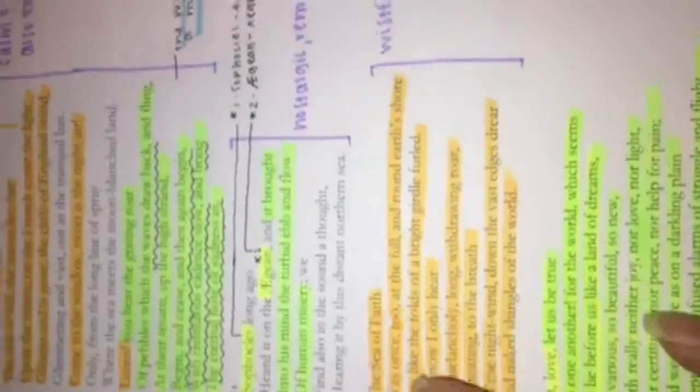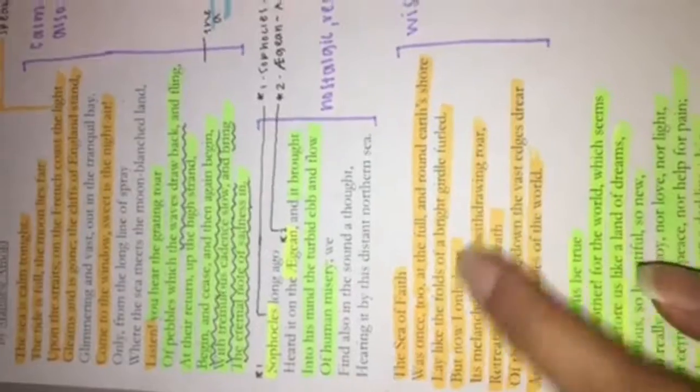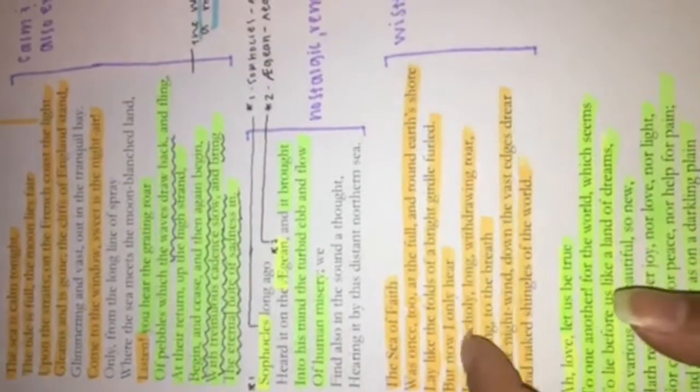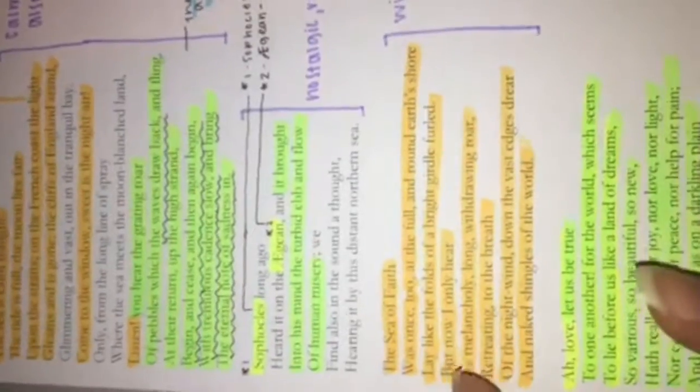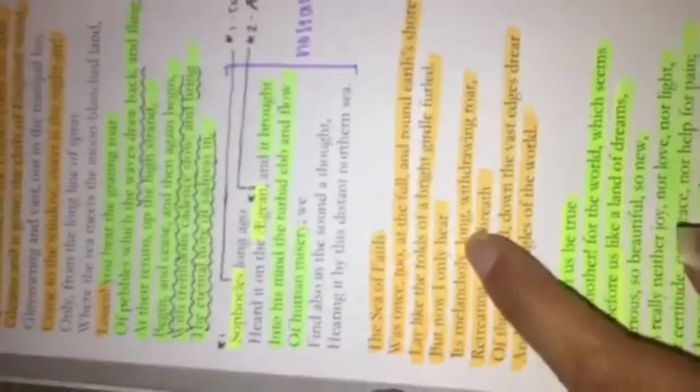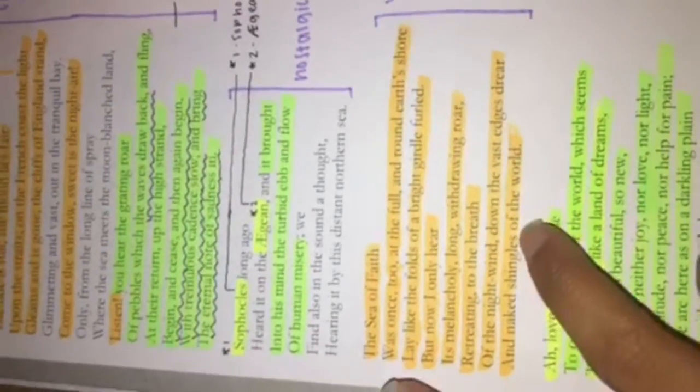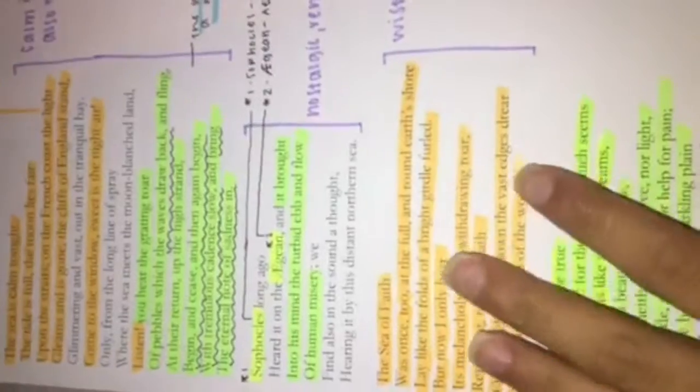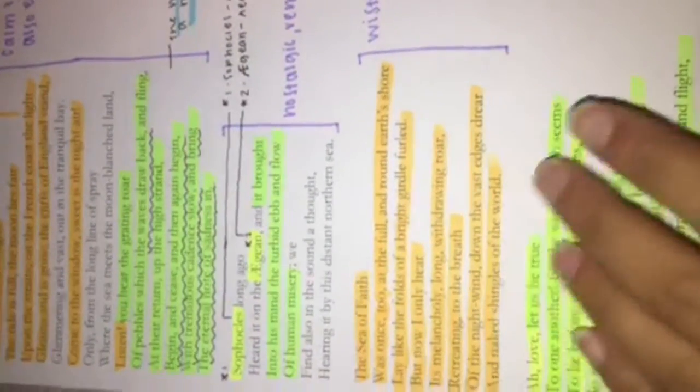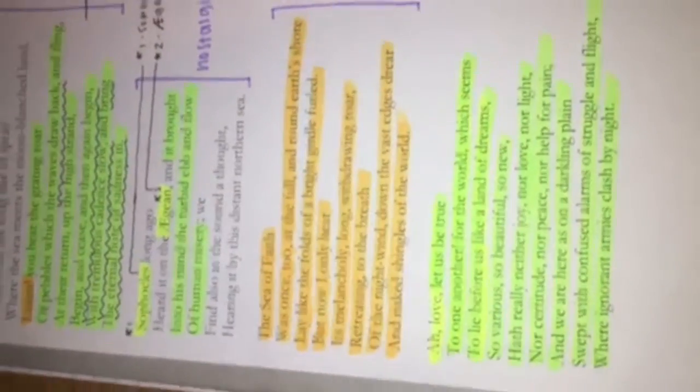And then it also says here that the sea of faith was once full and round earth's shore, and would lay like the folds of a bright girdle furled, and then he says, now I only hear its melancholy long withdrawing roar, retreating to the breath of the night wind, so this is like the waves are like the sadness and the melancholy vibe.